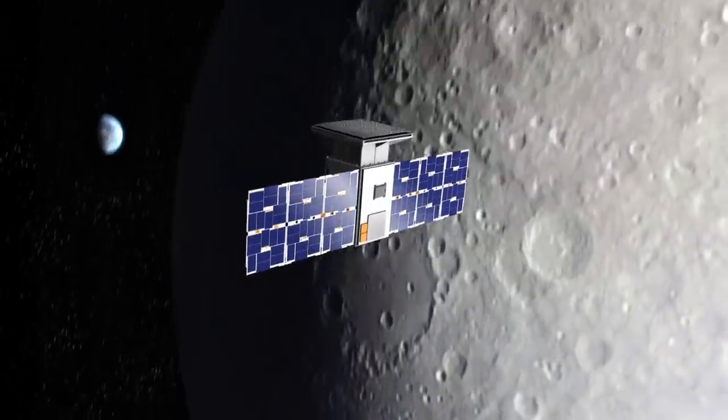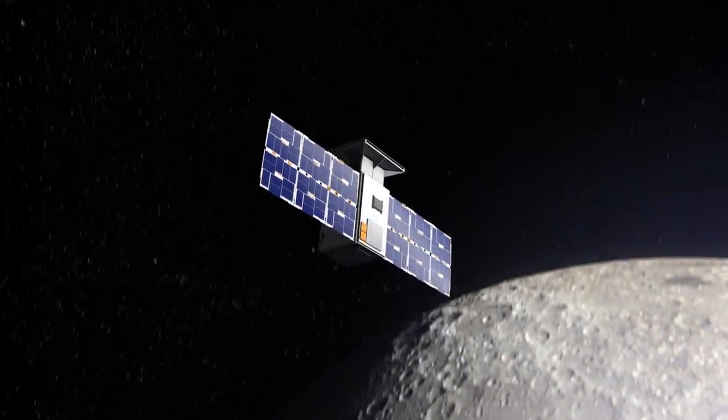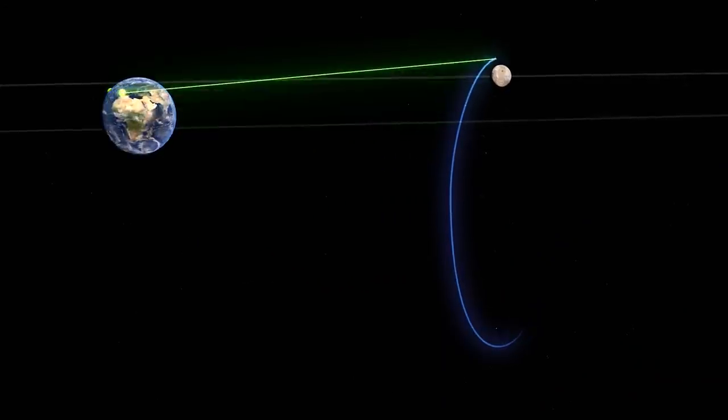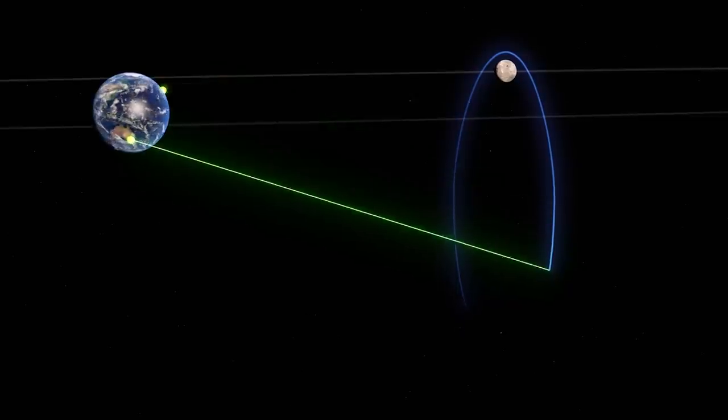The path provides an unobstructed view of Earth as it orbits the Moon's poles and allows for continuous communications with ground-based control centers.